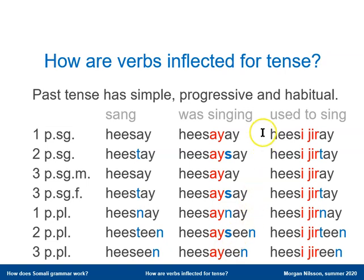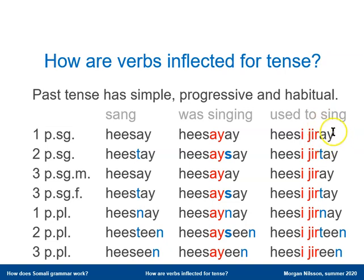And finally there is a third aspect in the past tense in Somali: the habitual form, which is formed through the use of an auxiliary verb 'jirey'. This auxiliary carries the past tense suffix and follows after the infinitive of the basic verb that carries the meaning we want to express. So 'used to sing' would be 'hesi' — meaning 'to sing' — followed by 'jirey', meaning 'used to'.